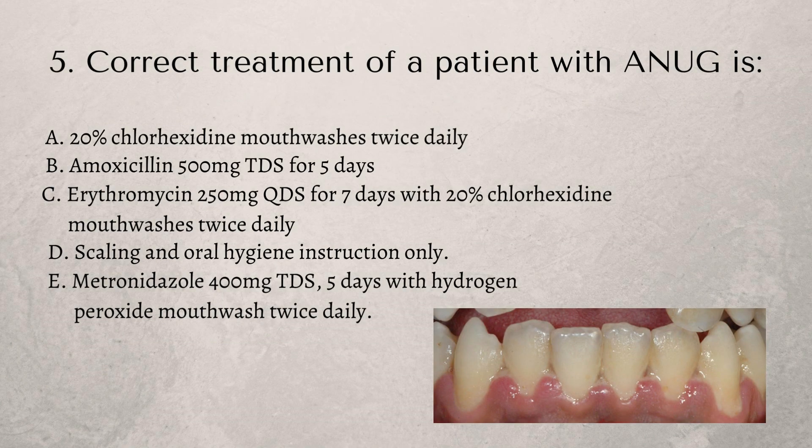Our last question: the correct treatment of a patient with ANUG — which is more commonly called NUG now — is: A) 20% chlorhexidine mouthwashes twice daily, B) amoxicillin 500mg three times a day for five days, C) erythromycin four times daily for seven days with 20% chlorhexidine, D) scaling and oral hygiene instruction only, or E) metronidazole 400mg three times a day for five days with hydrogen peroxide mouthwash twice daily.